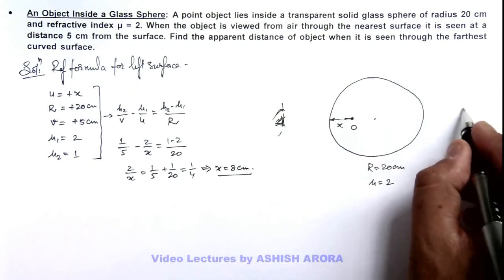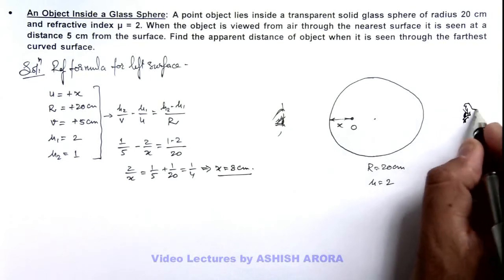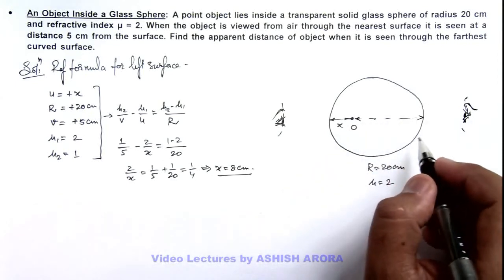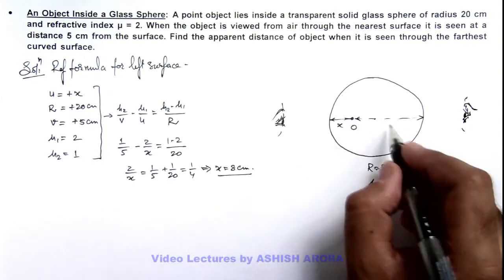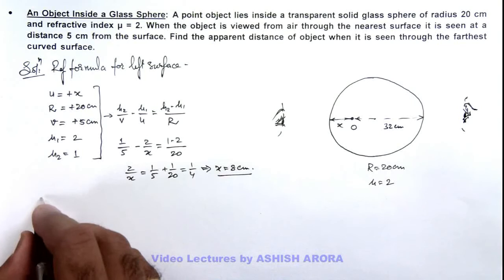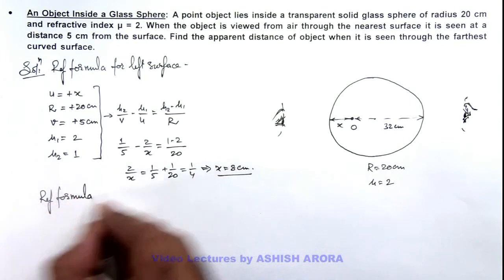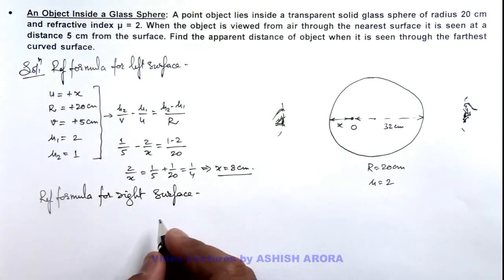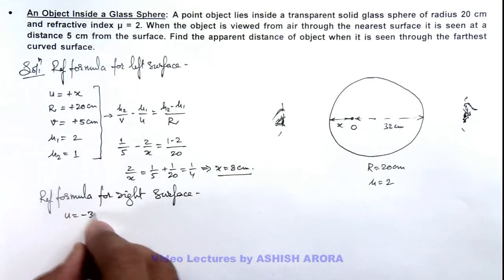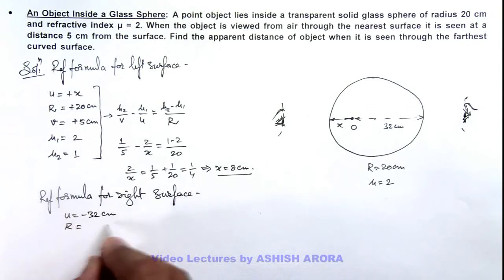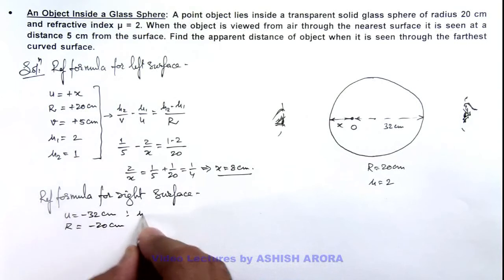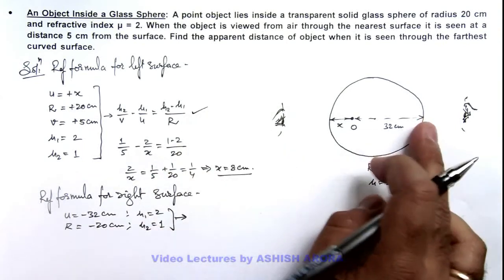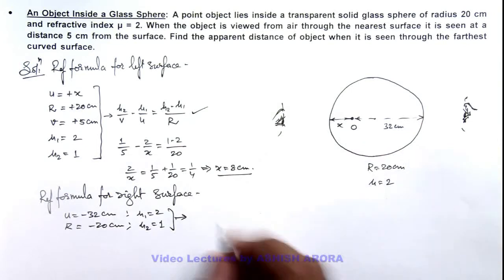Now when the object is seen from the other side, there is an observer on the right. For refraction at the right surface, the object distance is 20 plus 20 minus 8, which is 32 centimeter. Using the refraction formula for the right surface, we write u as minus 32 centimeter, radius of curvature as minus 20 centimeter, mu 1 as 2, and mu 2 as 1.